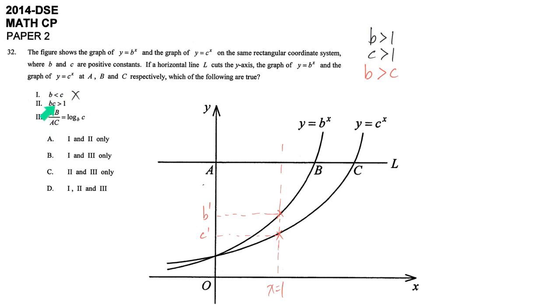Second, b times c larger than 1. It's because both b and c are both larger than 1. So their product should be larger than 1 also. The second statement is correct.